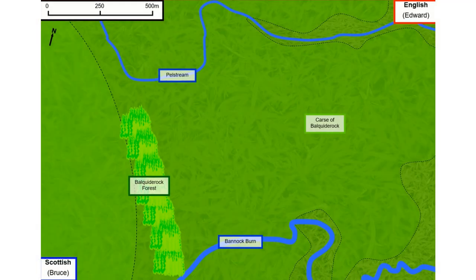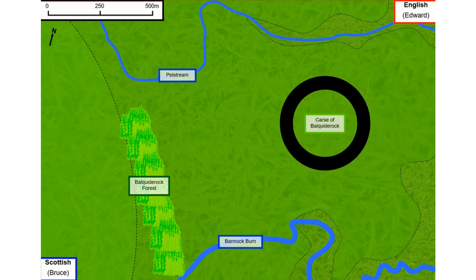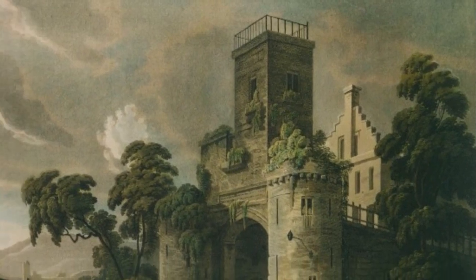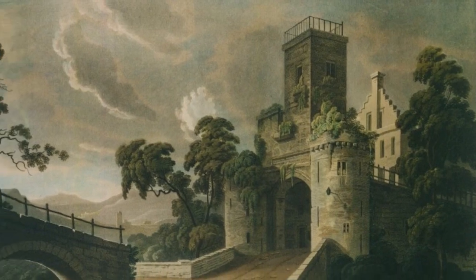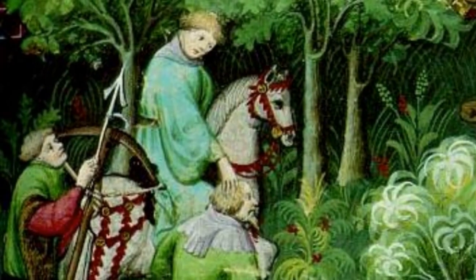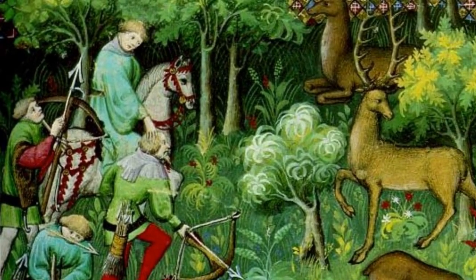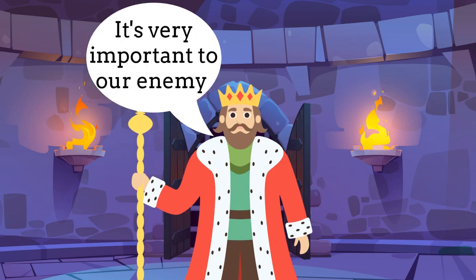Now let's get into the battle. The battlefield consists of the Karse of Balquitterrock, a relatively dry, flat area compared to the surrounding terrain. The Karse is enclosed on three sides: to the east and south is the Bannockburn River and smaller streams beyond it; to the north is the Pellstream and marshland beyond it. Stirling Castle, held by the besieged English garrison, lies to the northwest but is only easily accessible by moving west of the shown map and then north along the Roman road. This movement west is restricted by the Balquitterrock forest, which masks a modest elevation change. Bruce's objective is to prevent the English from relieving Stirling Castle, while Edward's is to do just that.